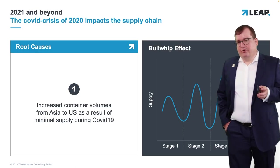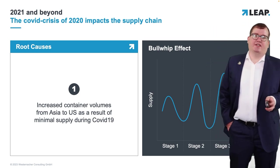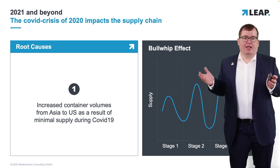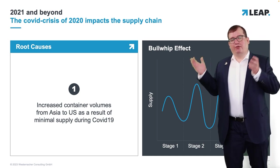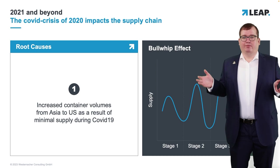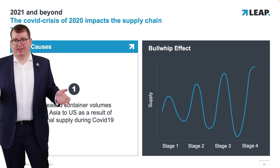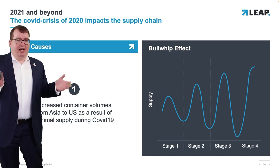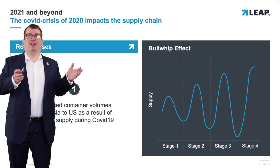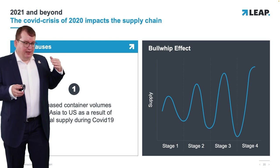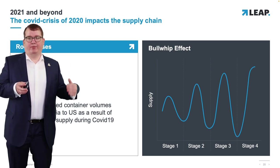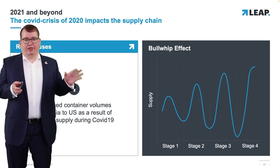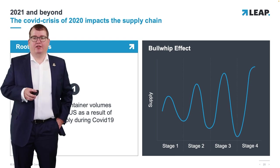Before going into the impacts seen in 2021 and 2022, we need to explore the root causes for these disruptions. First, there was an increased container volume from Asia to the US, due to minimal supply during the COVID crisis — and as shown on the right-hand side, this is related to the bullwhip effect in supply chain theory: when demand changes at one stage, the bullwhip effect amplifies changes in supply and stock levels across the other stages.